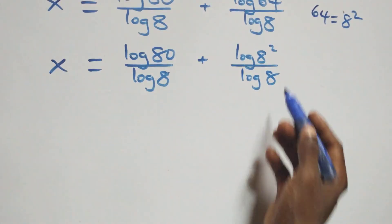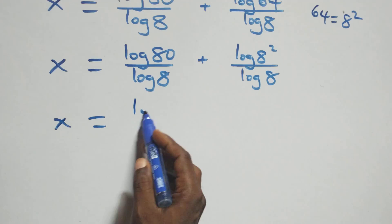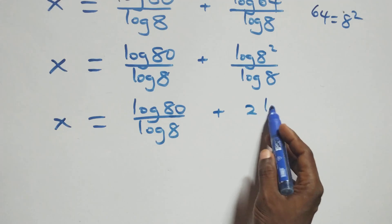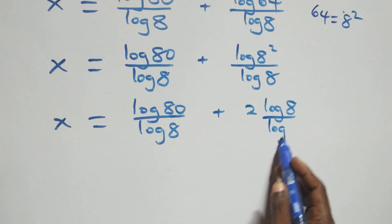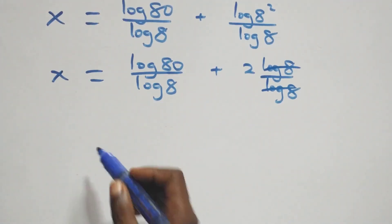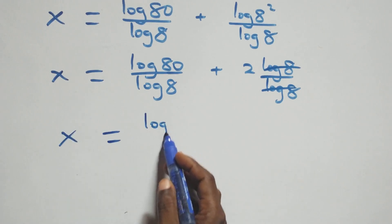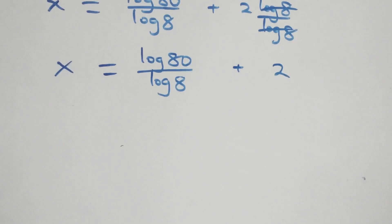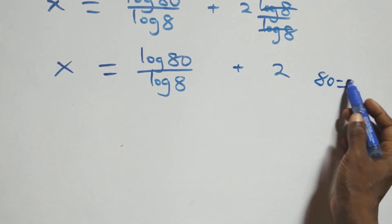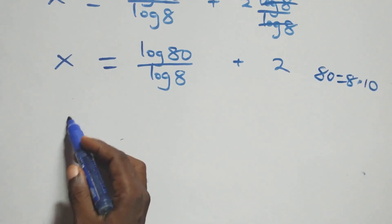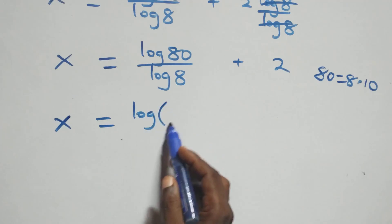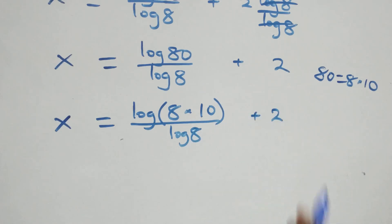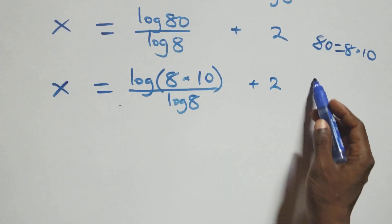Here we apply the power rule of logarithm: the 2 comes out, and we have x equals log 80 over log 8 plus 2 log 8 over log 8. Then log 8 cancels, giving x equals log 80 over log 8 plus 2. Also, 80 can be written as 8 times 10, so this becomes x equals log(8 times 10) over log 8 plus 2.